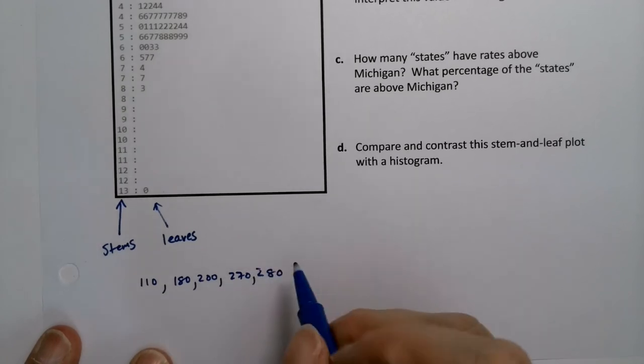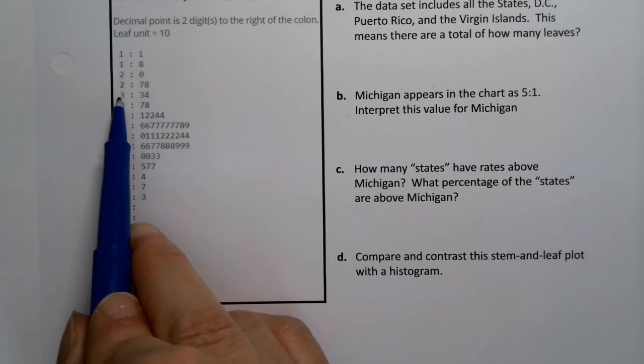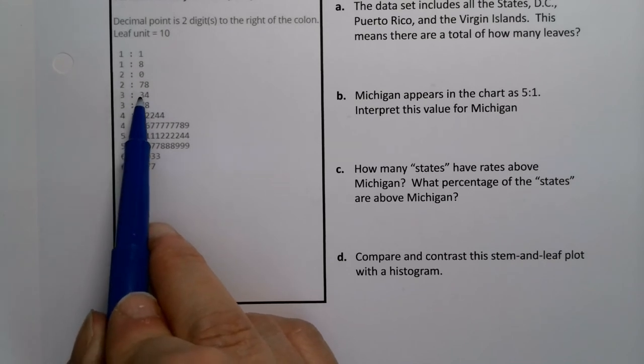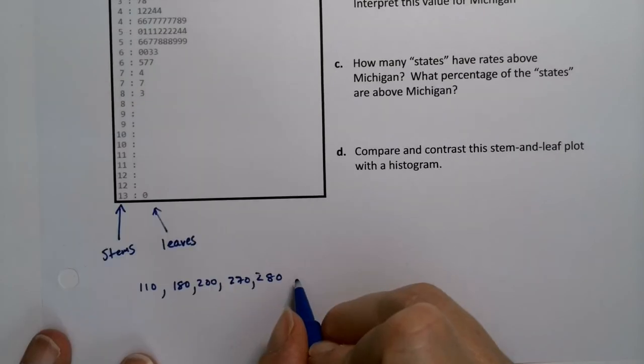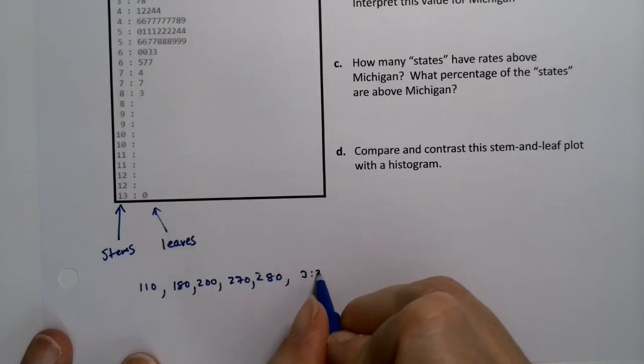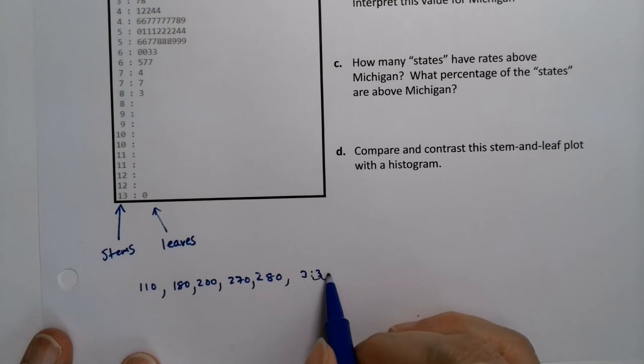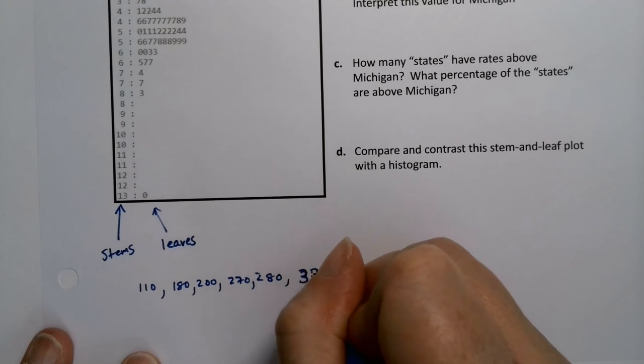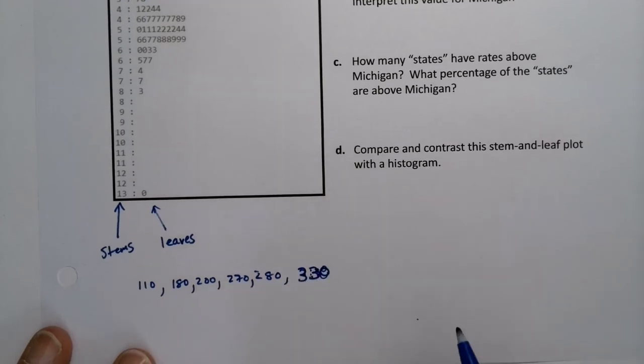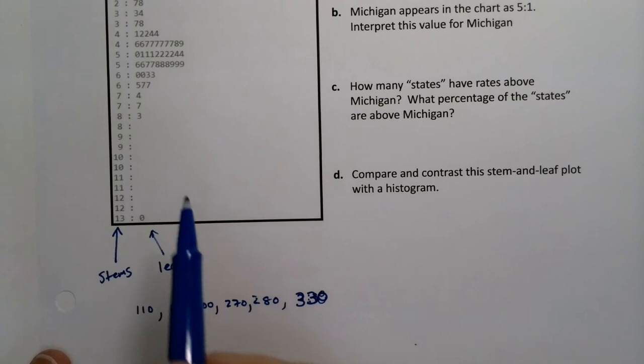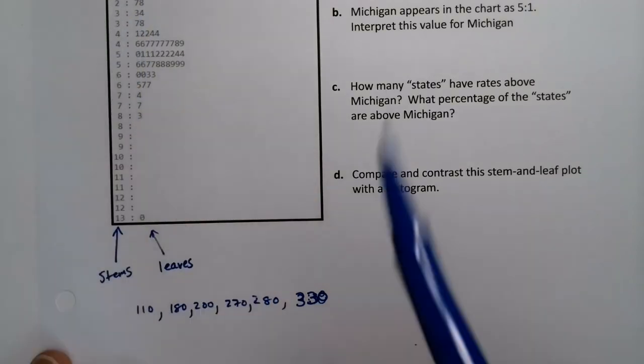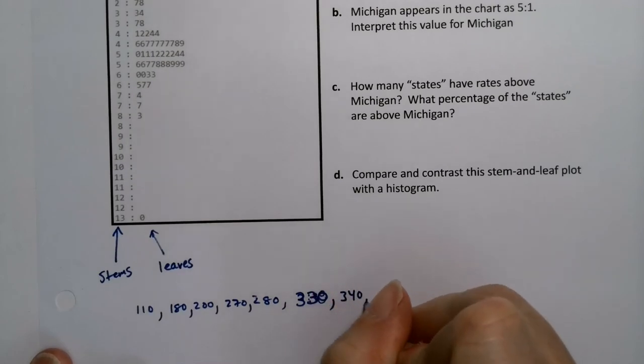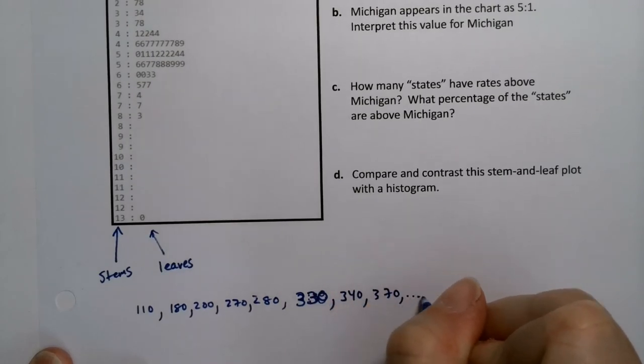I'm not going to list all of them. The 3 colon 3 stands for 300 over here and 30, right, because the decimal is two spots over. So if you look at the colon, 3 colon 3, the decimal is two spots over. If you swing it two over and put a zero in the middle, that leads you to 330. And then the 3 and then the 4 would be 340, 370, and so on. I'm not going to write all of them.